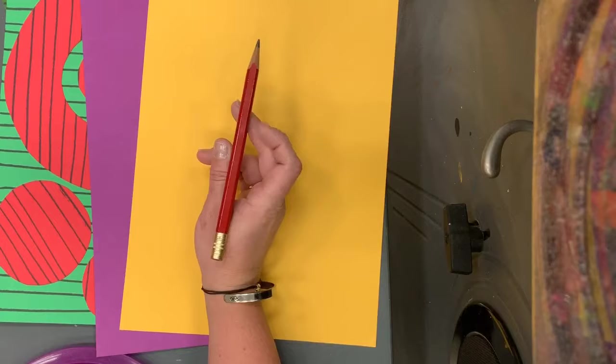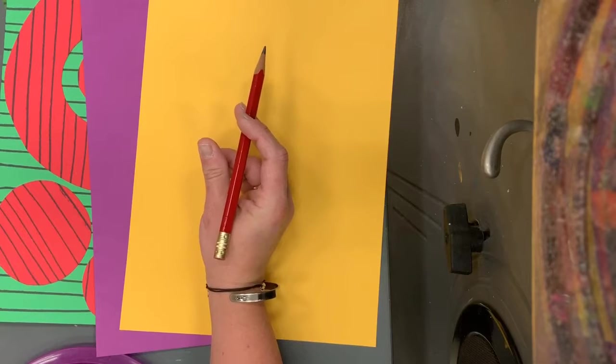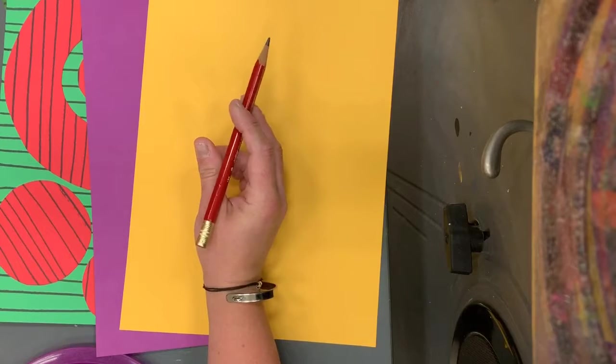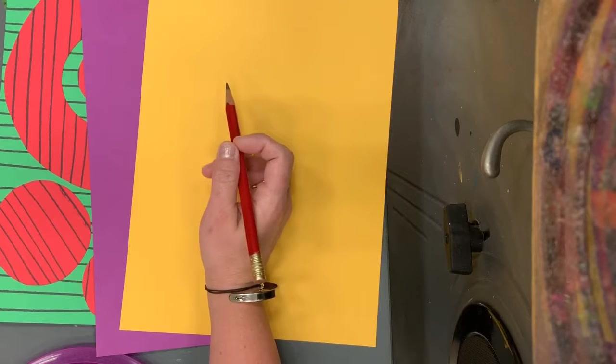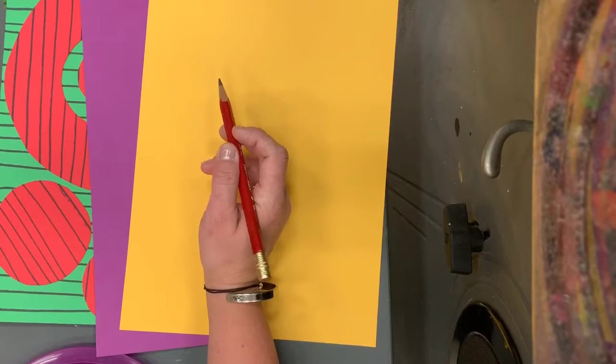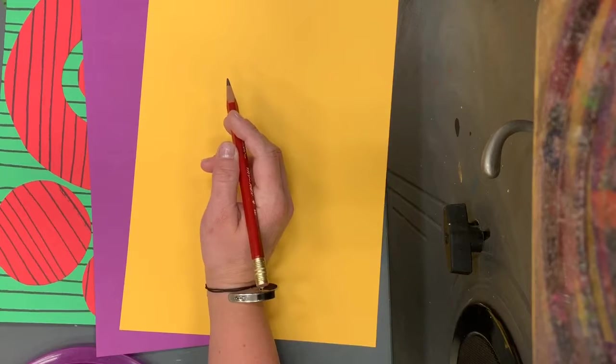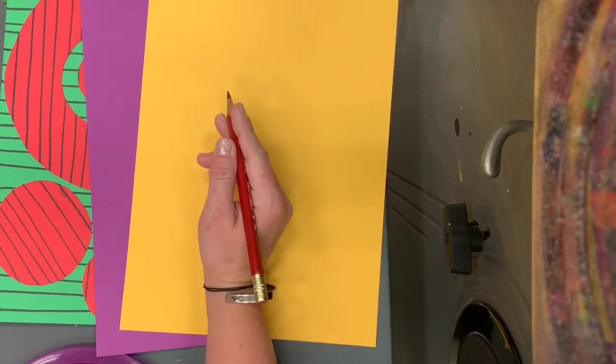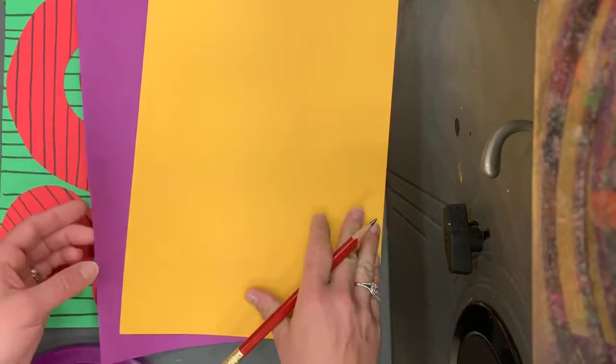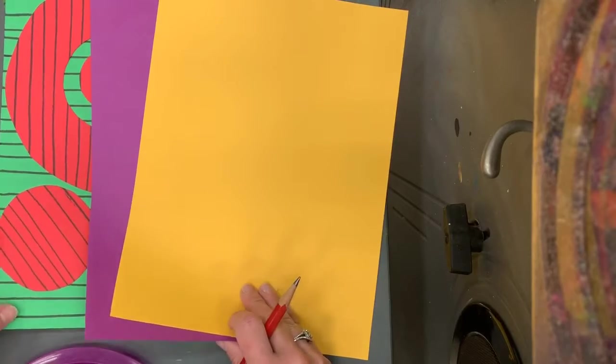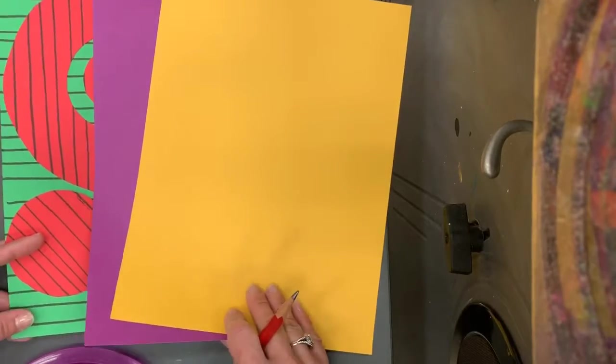Also the poster right above my board that says complementary, you can see the three different complementary colors. We've got red and green, yellow and purple, and blue and orange, our Astros colors. Those are what we're going to use today. You'll have a choice of which complementary color set you want to use.